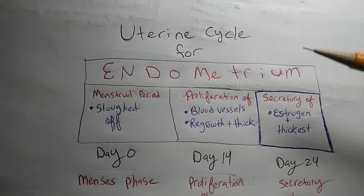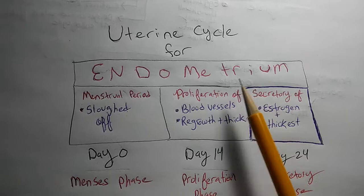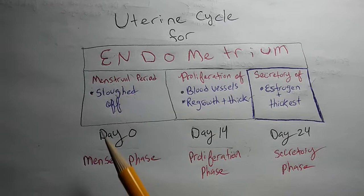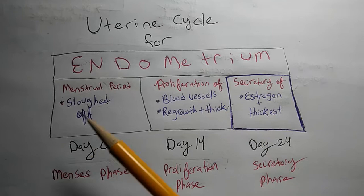Finally, we will have the uterine cycle for endometrium. So, we will have a square here, we'll have endometrium. There's three phases, day 0, day 14, and day 24. So, the words will basically match up with the phases, and you could also say it's just from left to right.